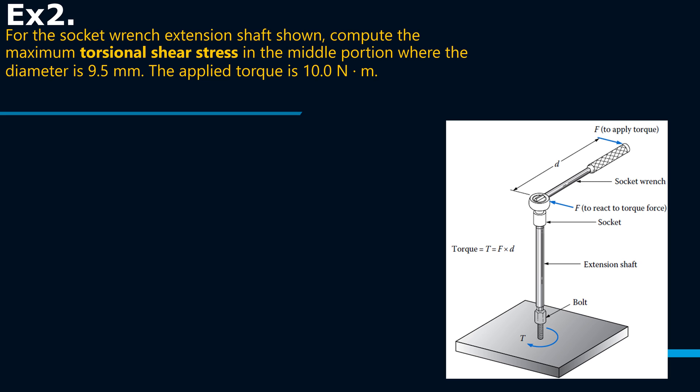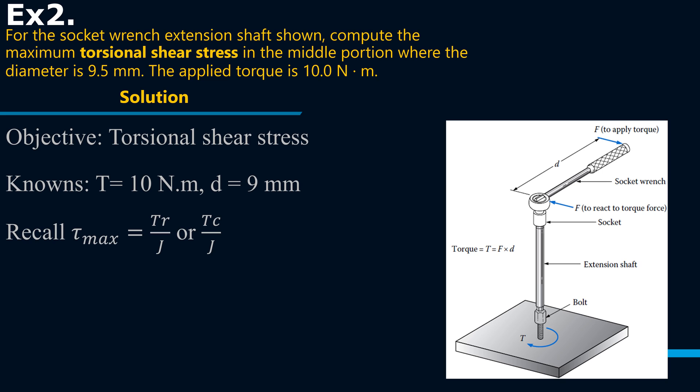The applied torque is 10 Newton meter. So again, the solution: what is the objective? The objective is to calculate torsional shear stress. What do we know? We know that the torque is 10 Newton meter, the diameter is 9 millimeters. If you don't remember this formula, you can check the videos where we developed these formulas, I think it's called torsion 1, 2, and 3. In this case we are simply going to apply the formula.